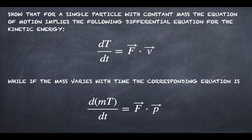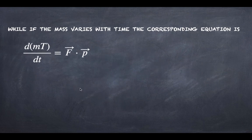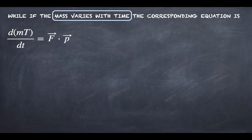Now the second part of the problem: if the mass varies with time, the corresponding equation is d(mT)/dt = F·p. This is the scenario where the mass varies with time.